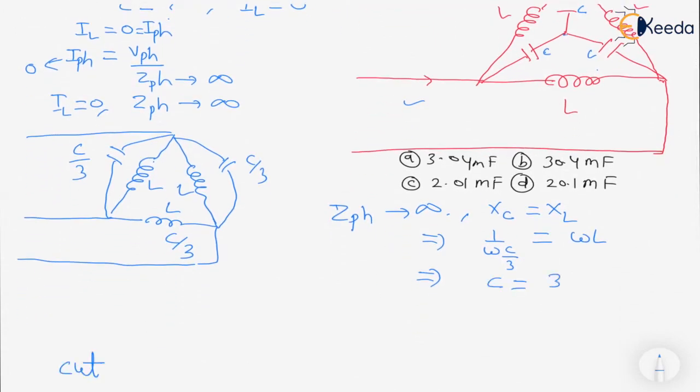So the value of C we can write that 3 upon omega squared means 2 pi f, f is 50, squared into L that is 10 into 10 to the power minus 3. So this will be coming out C is equal to 3.04 millifarad. So option A is correct. Here it is all about this question, thank you.